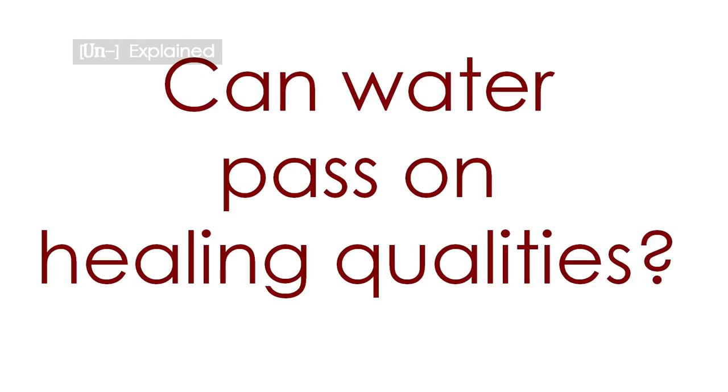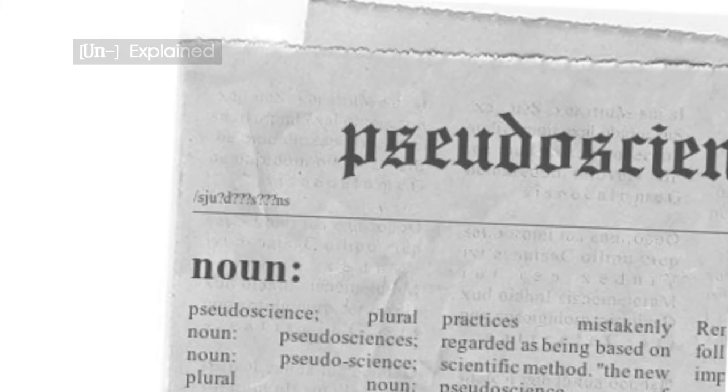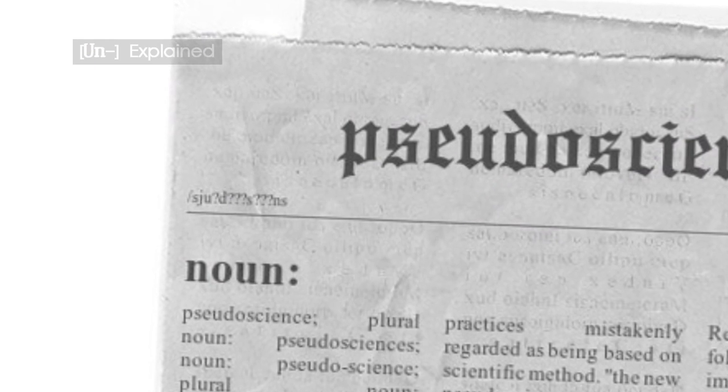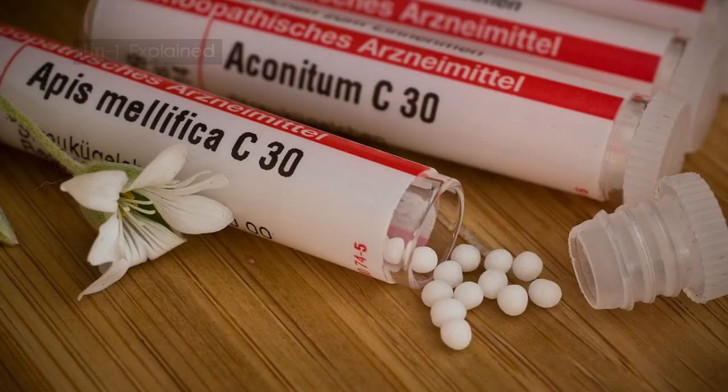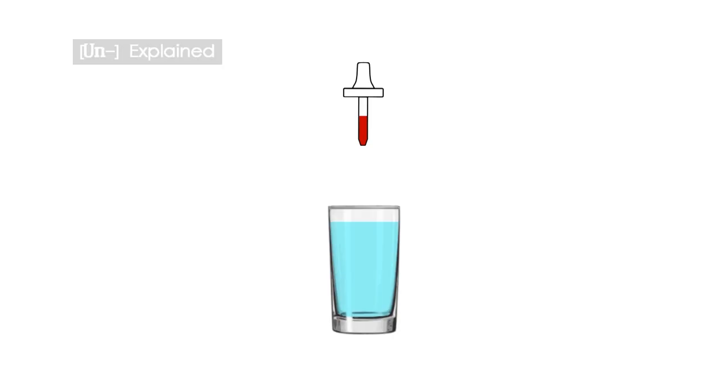Homeopathy is a pseudoscience—nonsense wrapped in scientific-sounding jargon. Dilutions are measured on the centesimal scale, or C scale. A 1C dilution contains one part substance and 100 parts water.